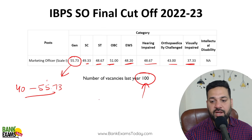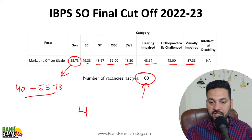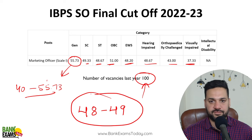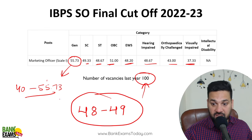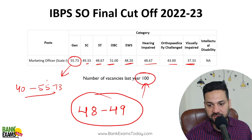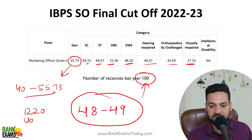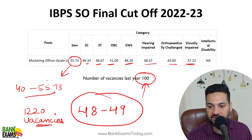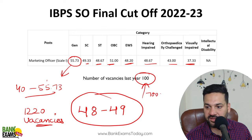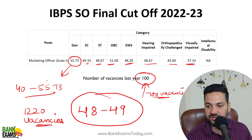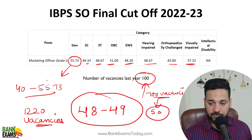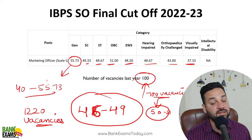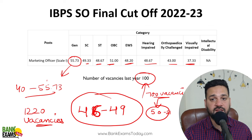What we can expect is that the final cutoff, even for 1200 posts, is going to be around 48 to 49. If there are 1220 vacancies as per the RTI replies, the cutoff will be 48 to 49. But if there are only 700 vacancies, the cutoff will be around 50 to 51. It could go as low as 46 — so the expected range is 46 to 49. Keep 48 as your comfortable benchmark.